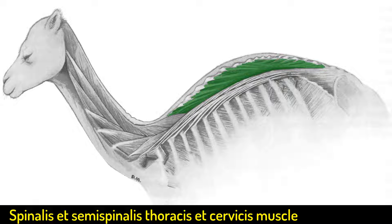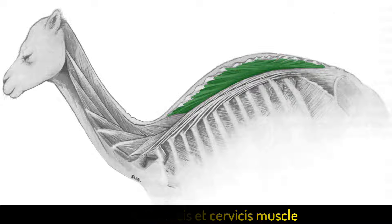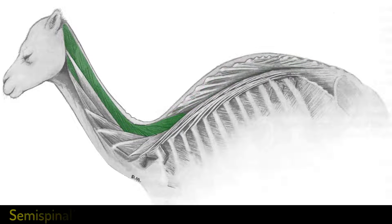The semispinal muscle in the thoracic region arises from the transverse and mammillary processes of T6 to T12. In the cervical region, the semispinal muscle arises from the articular processes of T1 and T2 and inserts on the spinous processes of cervical vertebrae three to five.